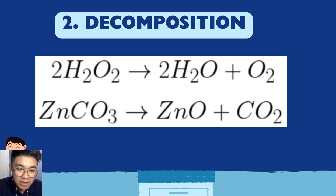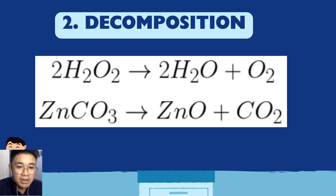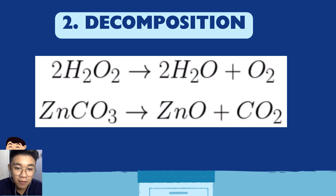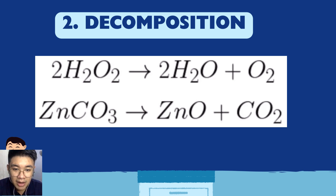Let's check the balancing. In the reactant 2H2O2, hydrogen count is 2×2 = 4. On the product side, 2H2O provides 4 hydrogen atoms — balanced. For oxygen: reactant has 2×2 = 4 oxygen atoms. Products: 2H2O contributes 2 oxygen, plus O2 contributes 2 oxygen — total 4. The equation is balanced.